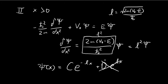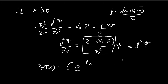We neglect the D·e^(+Lx) term because including it makes it impossible to normalize our wave function — as x tends toward infinity, e^(+Lx) tends toward a very large number. So for region 2, ψ(x) = C·e^(−Lx).